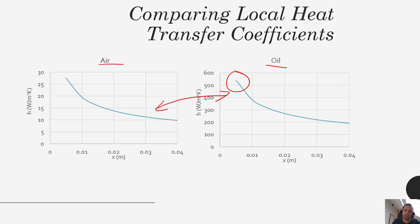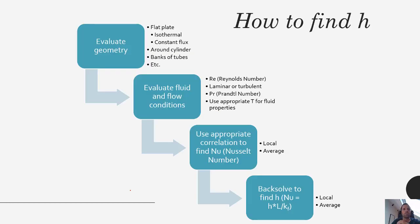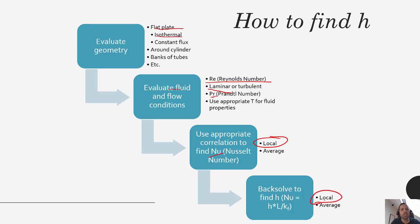The procedure is: first evaluate your system geometry — here we had a flat plate under isothermal conditions. Then evaluate your fluid and flow conditions, looking at the Reynolds number. In this case we had laminar flow. Use the Prandtl number, plug those into a correlation to get the local Nusselt number, and then back-solve using Nusselt number equals H times L over K to get your local heat transfer coefficient. That's the basic procedure for finding H in a particular scenario.